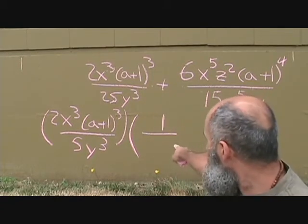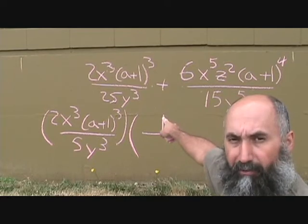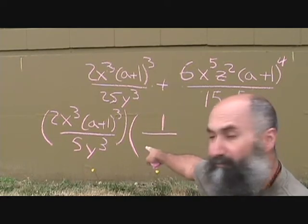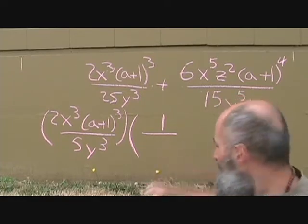For the denominator, we have 25y cubed. That's what we need to create. We have 5y cubed. So all we need in the denominator here is just a 5.